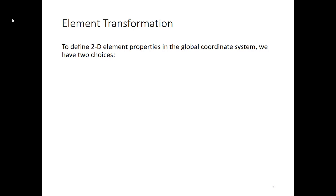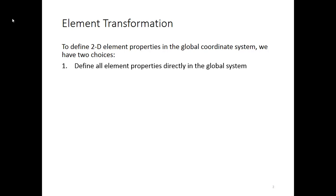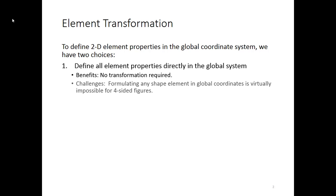Before we get into isoparametric elements, let's quickly review our options for element transformation. We have elements that we need in 2D space and a global coordinate system. One option is to define every single element directly in the global system. The benefit is we don't need to worry about transformation at all — everything is done with the global coordinate system.